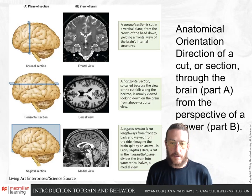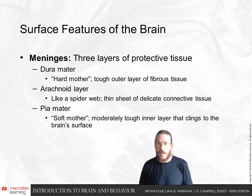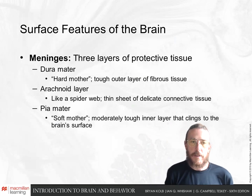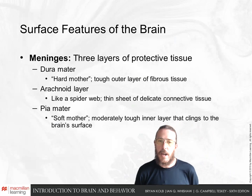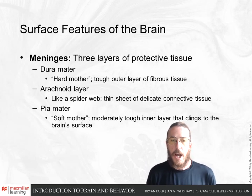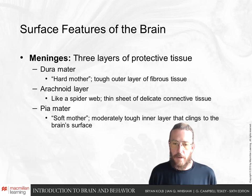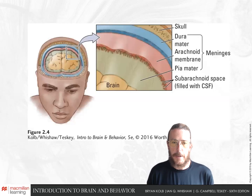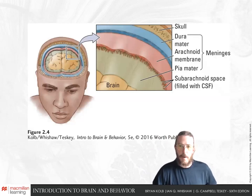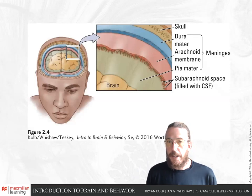Our brain is protected by a series of tissue layers called meninges, as well as our outer skull. The most outer layer of meninges is called dura mater — or 'hard mother' in Latin — a tough fibrous tissue. Inside that is the arachnoid layer, a more delicate connective tissue with holes. Finally, wrapped around the brain itself is the pia mater, or 'soft mother,' which clings to the brain's surface. Above the pia is the subarachnoid space, filled with fluid, then the dura mater, and then the skull and scalp.